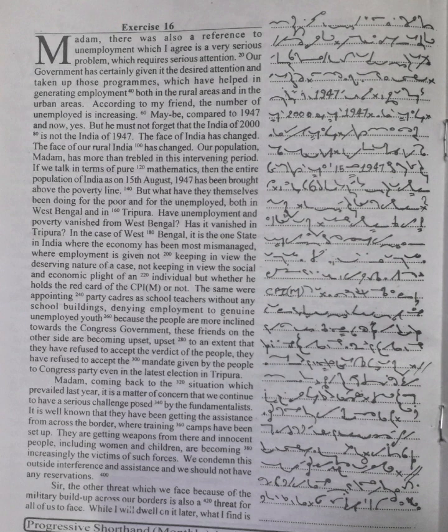But what have they themselves been doing for the poor and for the unemployed both in West Bengal and in Tripura? Have unemployment and poverty vanished from West Bengal? Has it vanished in Tripura? In the case of West Bengal, it is the one state in India where the economy has been most mismanaged, where employment is given not keeping in view the deserving nature of a case, not keeping in view the social and economic plight of an individual, but whether he holds the red card of the CPI(M) or not.